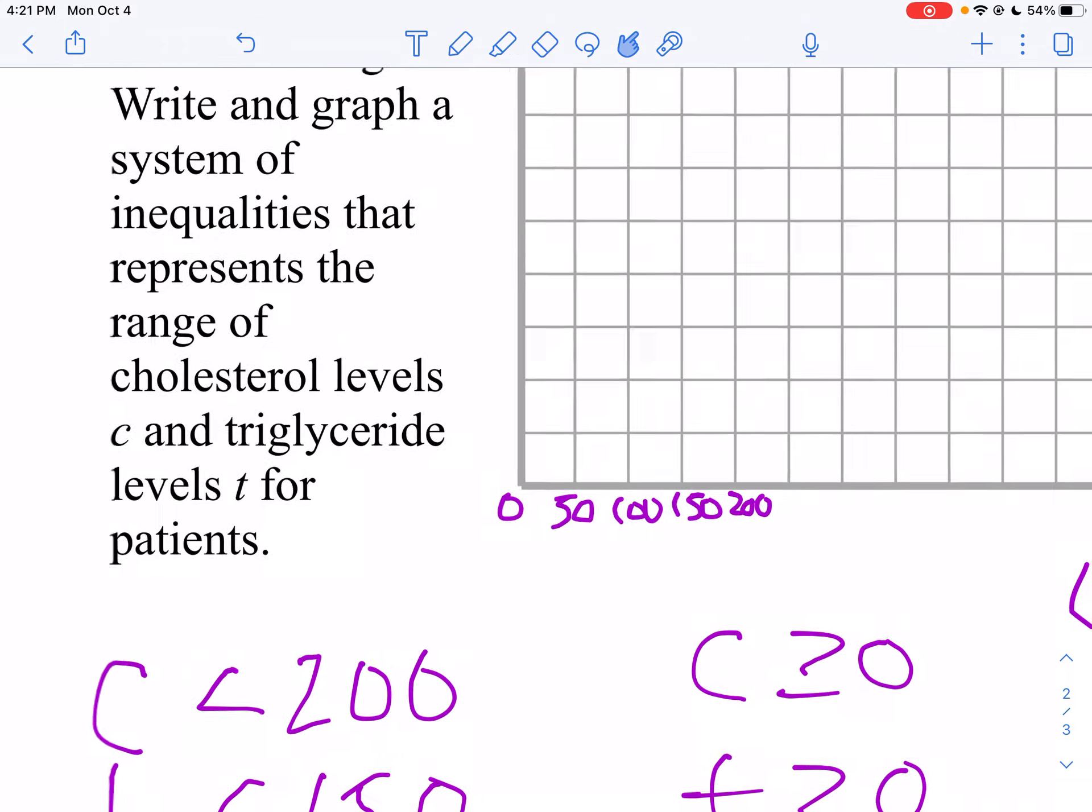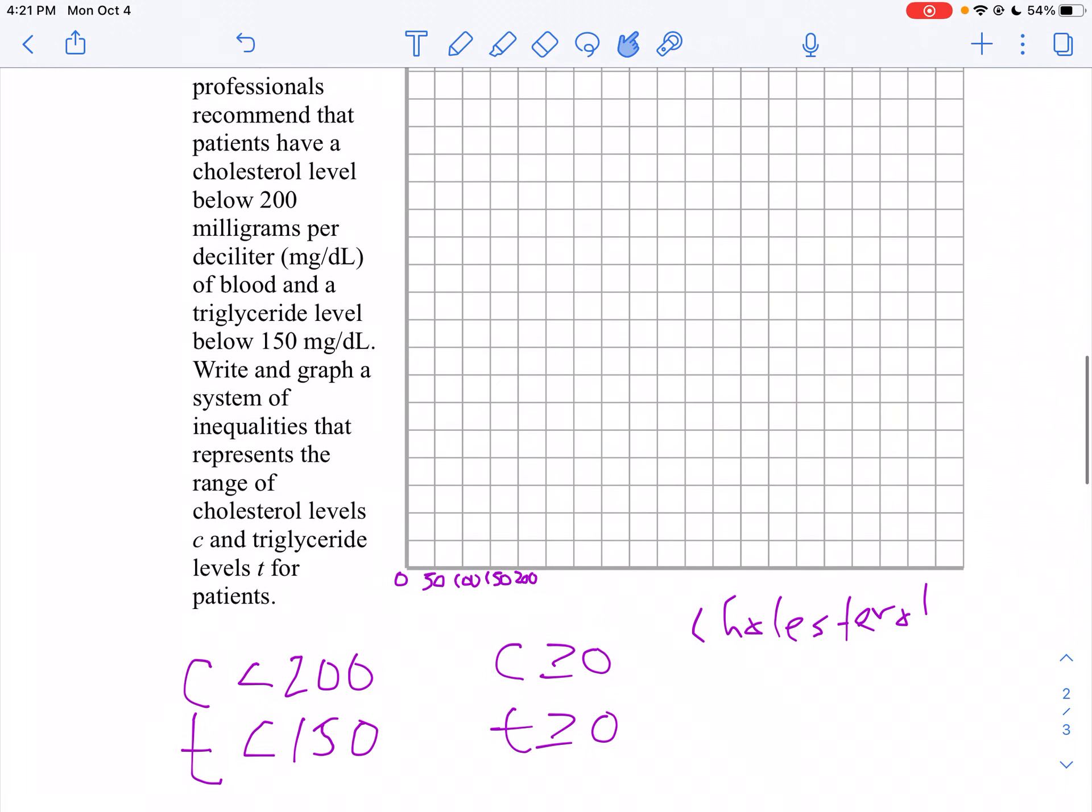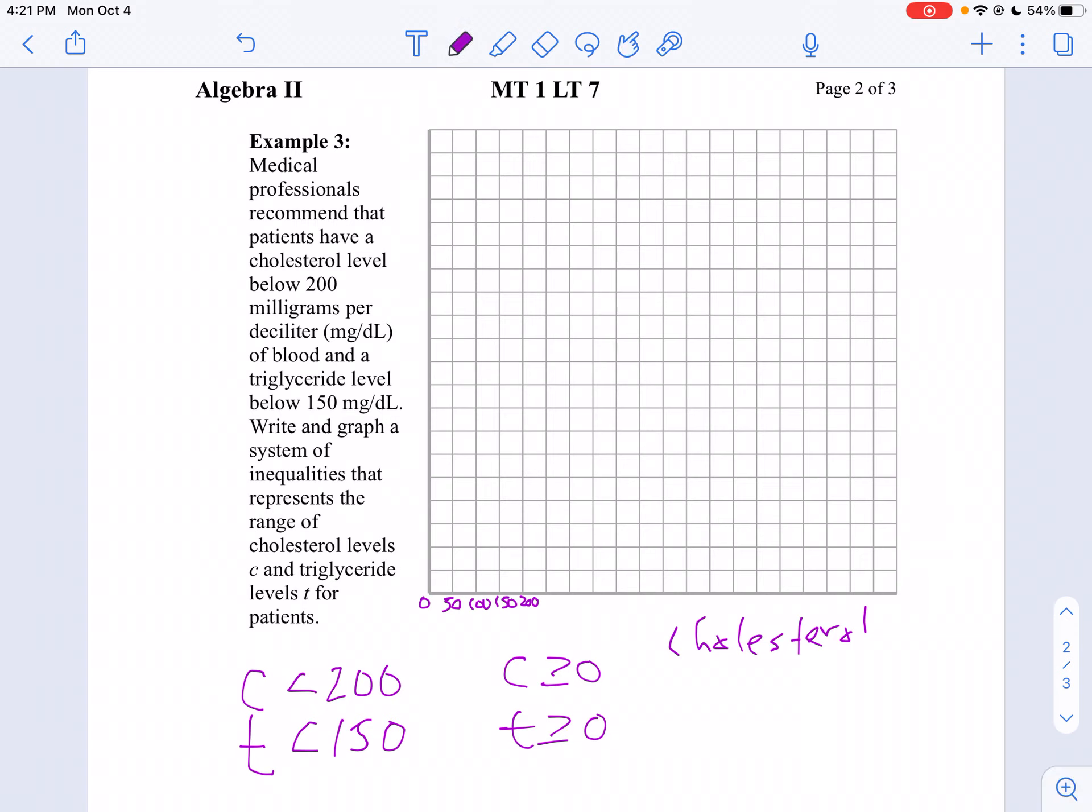Since I'm doing C for cholesterol, I'm going to put a dashed line going through 200. That's going to be vertical, and I'm going to shade to the left of that. I'm only concerned about the positive region.